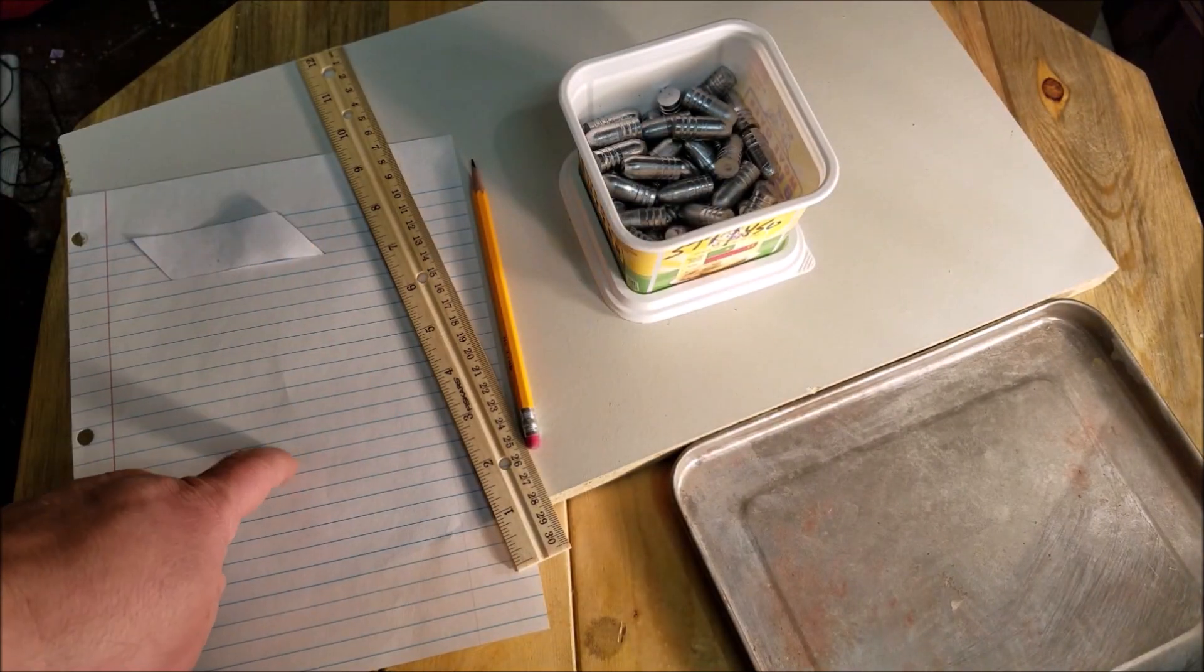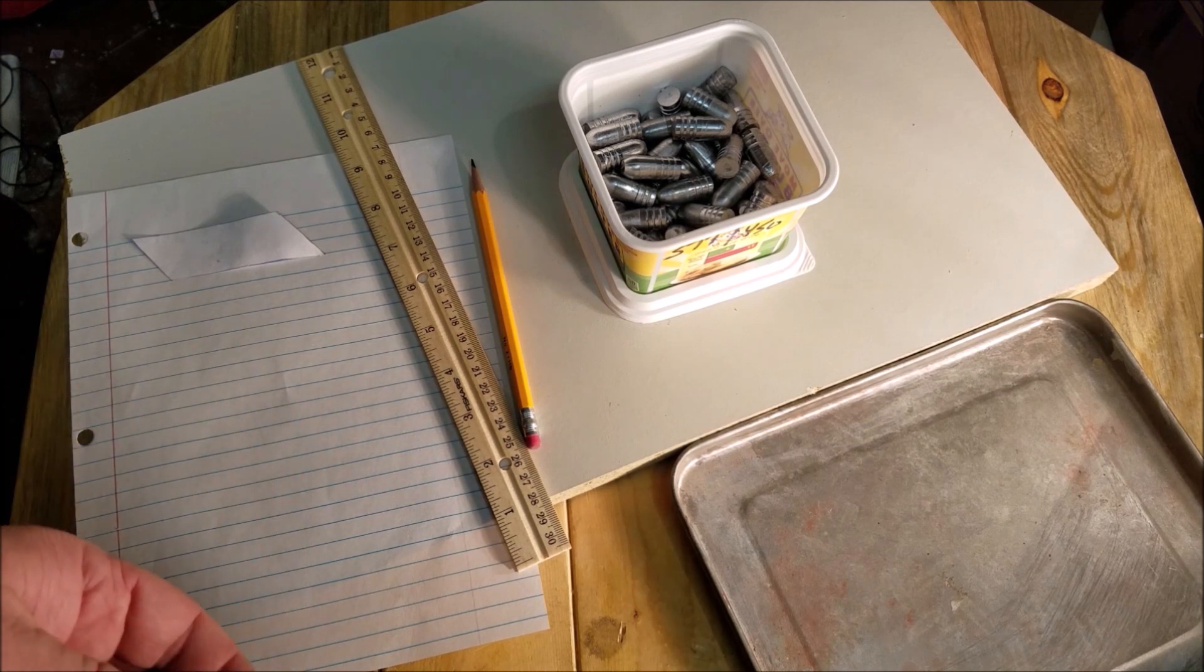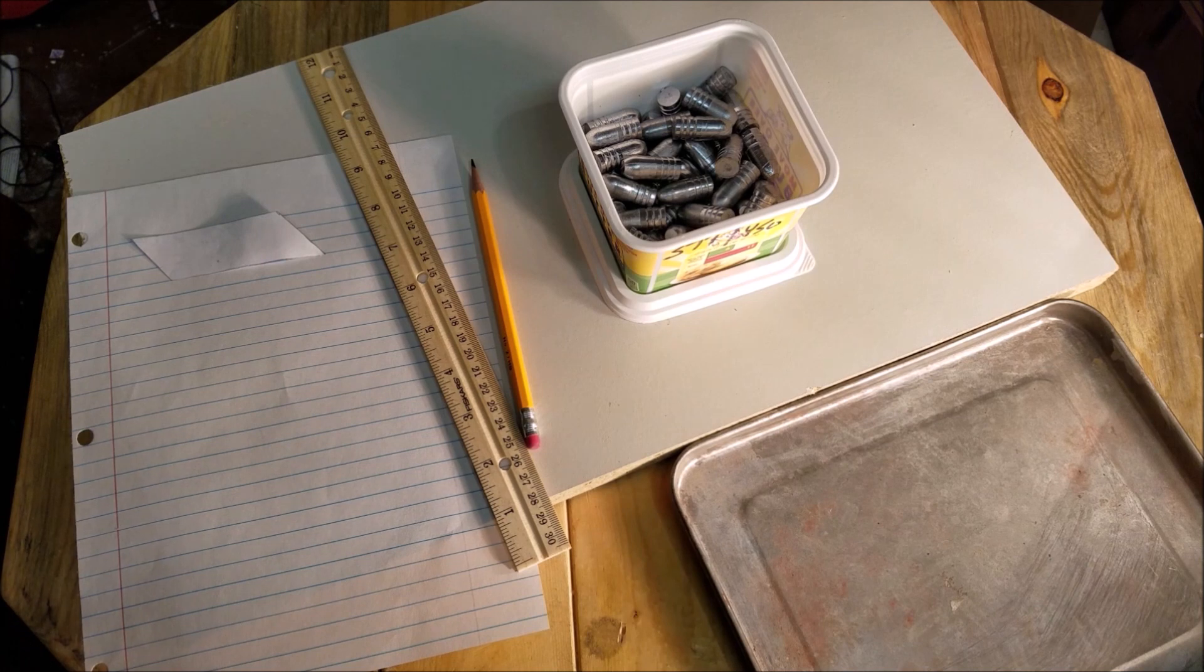We're going to take this jacket off, this paper patch, and we are going to go to a little thinner paper, this lined paper here. We're going to cut some patches out, then we're going to roll them and give you an idea how this process works.